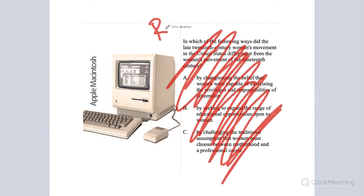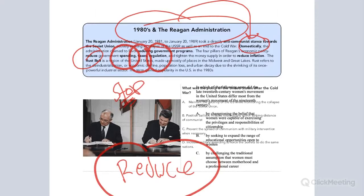There's a question here on Reagan and on reducing. You're going to remember — what were the three things that Reagan's administration was domestically doing? Reducing what? Reducing spending — so you wouldn't have something on increasing spending; it'd be decreasing spending. And not increasing wages — under Reagan, we were decreasing wages. And not increasing taxes — we were decreasing taxes. And decreasing regulations or making it easier for companies to go overseas.